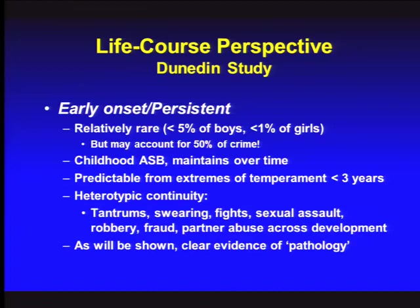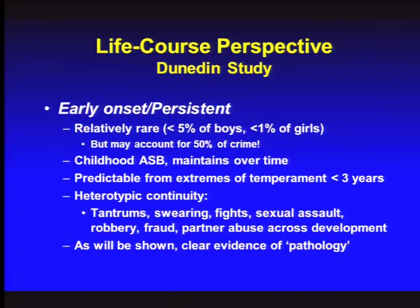Moffitt called this the early onset, life course persistent group. As they followed these kids beyond the teen years into their 20s, these individuals engaged in spouse and partner abuse and adult crime. If you get into this trajectory early, it's hard to get out. This is the group you'd feature in the dictionary under heterotypic continuity — difficult temperament at 3, cussing out preschool teachers, initiating fights in elementary school, sexually assaulting in high school, moving into robbery, then partner abuse in the 20s. It wasn't the same behavior — it was an unfolding antisocial pattern over time. Moffitt says this group has a mental disorder, not just social deviance.